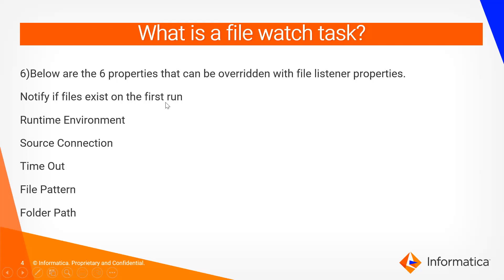The first one is 'Notify File Exists'. This option is also present in the file listener, but if you want to override this value, you can do so in the file watch task. Next are runtime environment, source connection, and timeout. The timeout defaults to 5 minutes — if you want to increase it to 10 minutes, you can add this field and set a value. There are also file pattern and folder path.